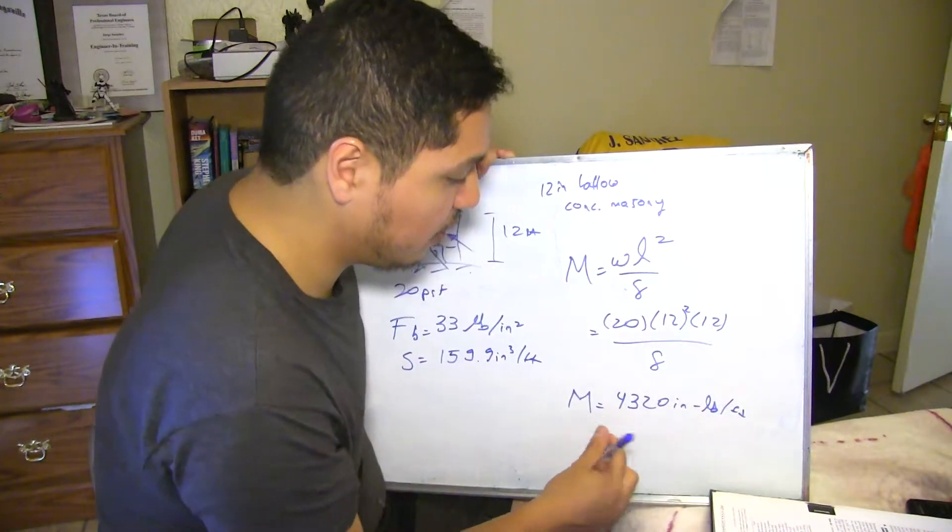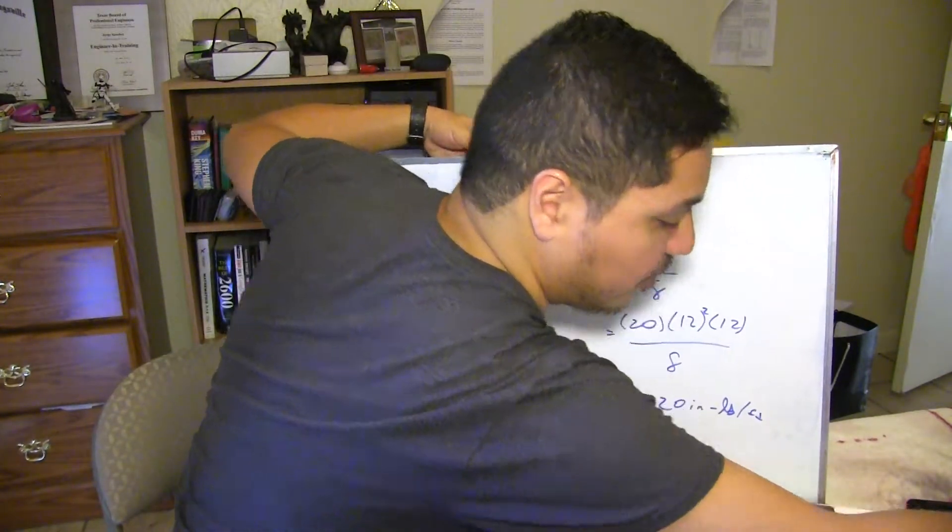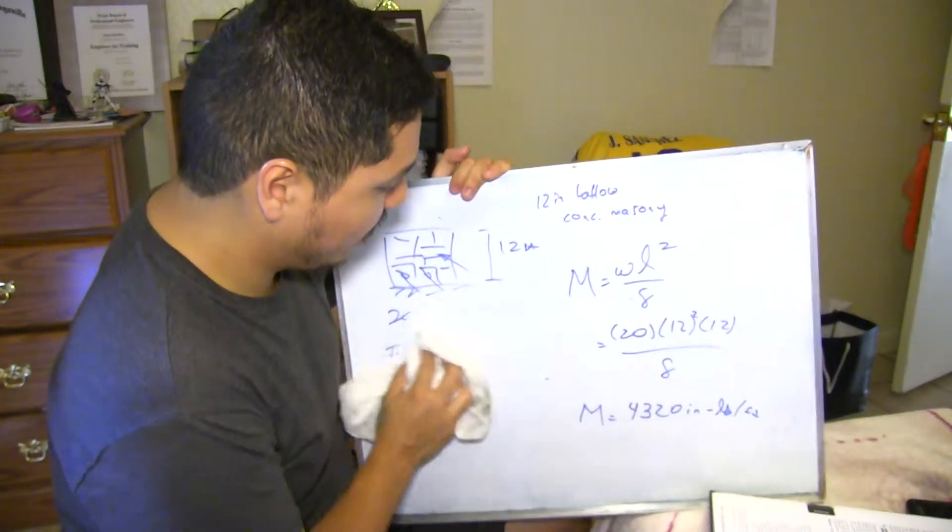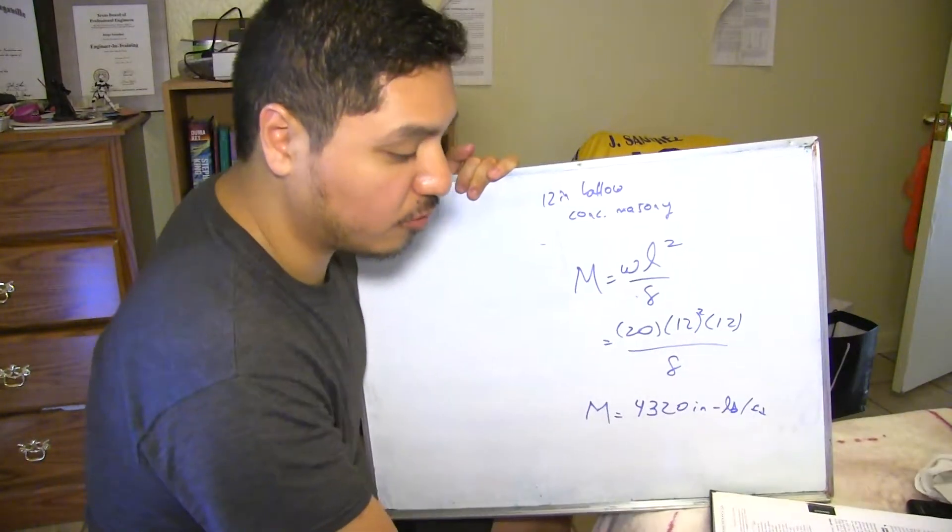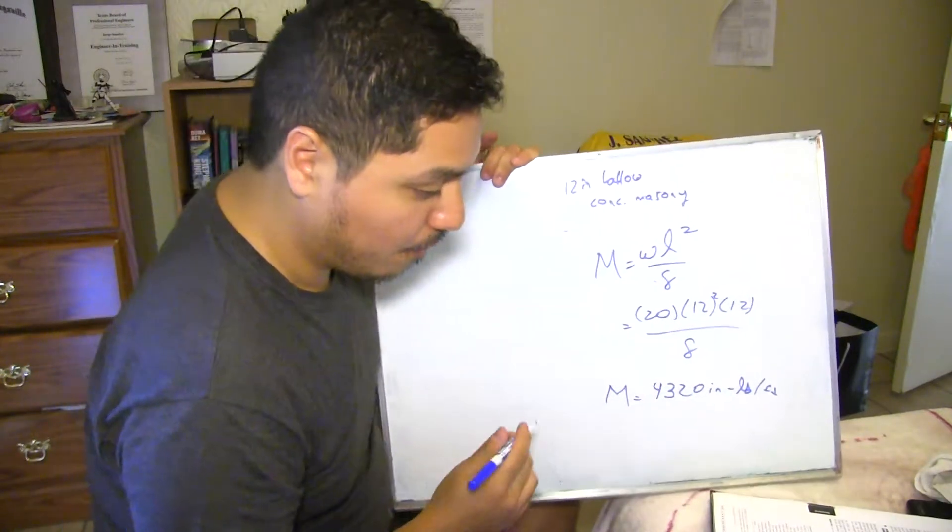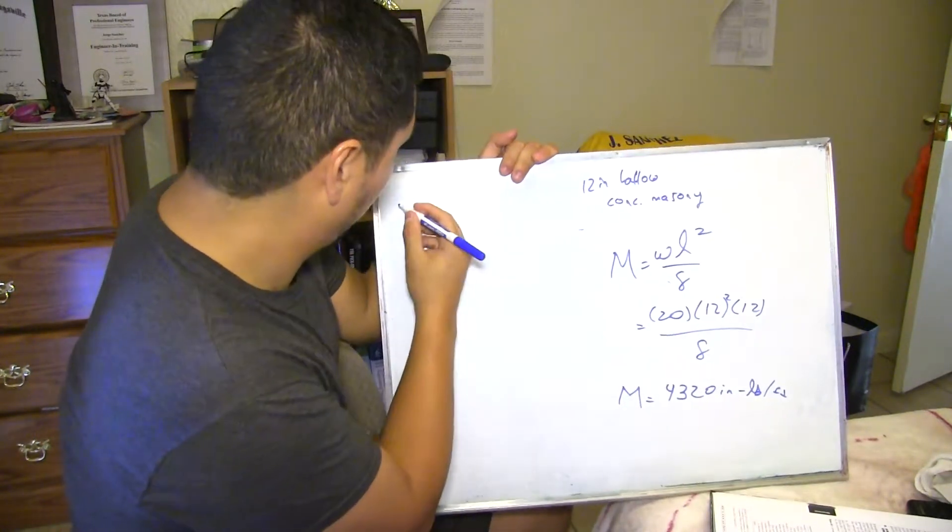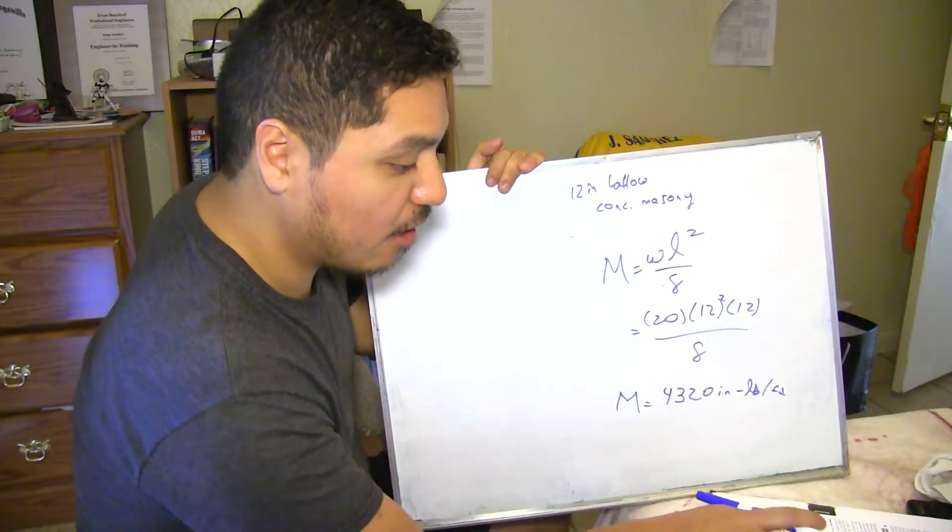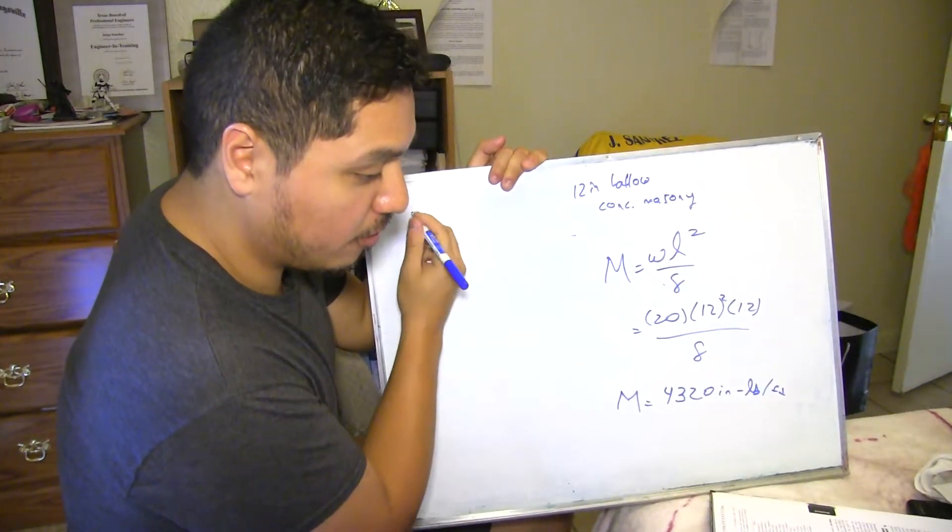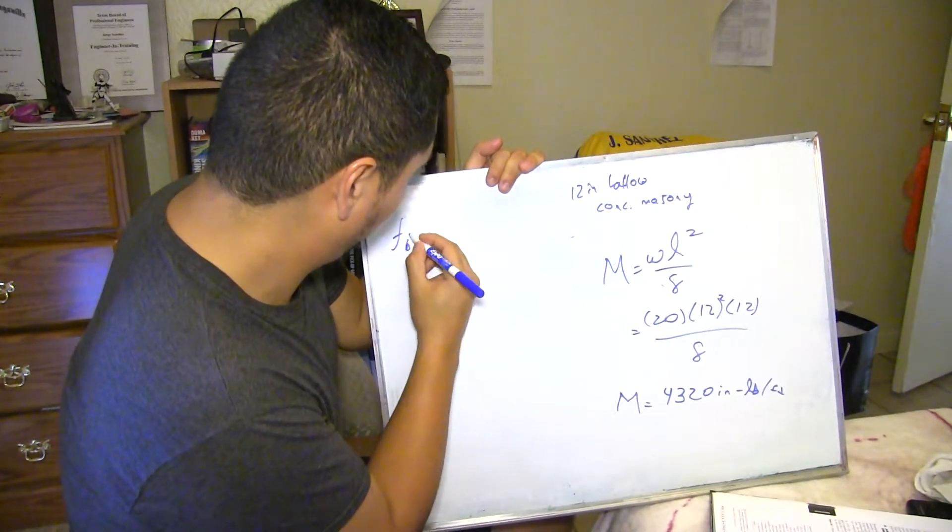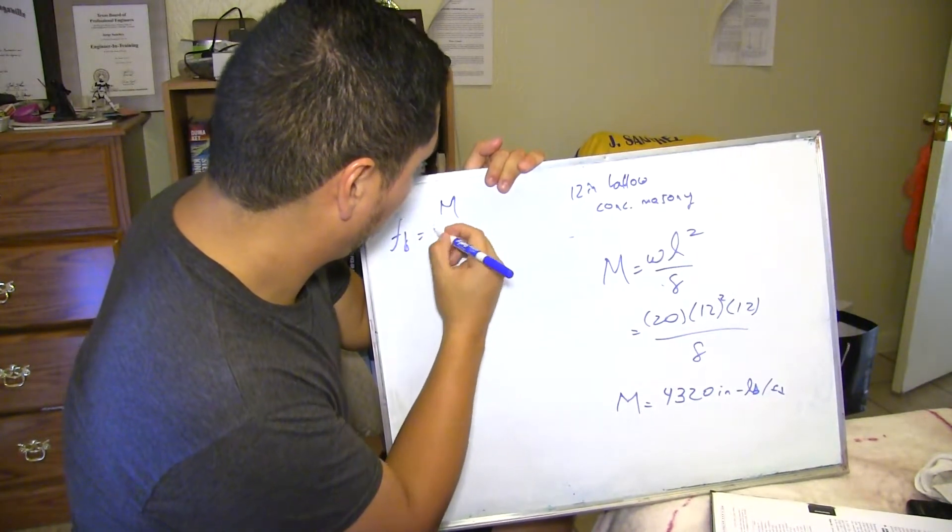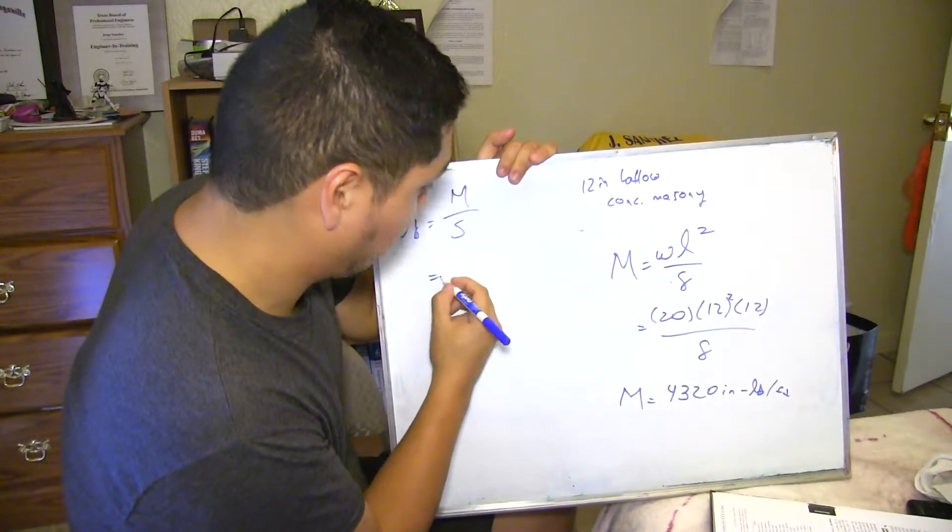All right, this is your maximum moment. And then you're going to be comparing this value against your allowable stress that is going to be your 33 pounds over inch squared. Now you first need to convert this, and that's why we got the S value. You're going to get your stress is going to be your moment over your S.